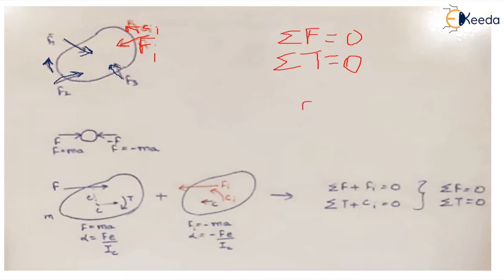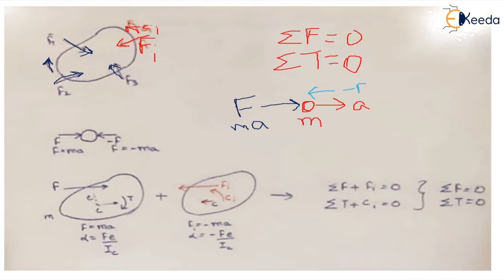Consider a body moving with some acceleration a and mass m. To produce this acceleration, a force must act on the body equal to mass times acceleration. To satisfy static equilibrium, there must be one more force acting in the equal and opposite direction, denoted as minus F, with magnitude equal to negative of mass times acceleration. This force is the inertia force, which opposes and nullifies the effect of the externally applied force to give the condition of static equilibrium.